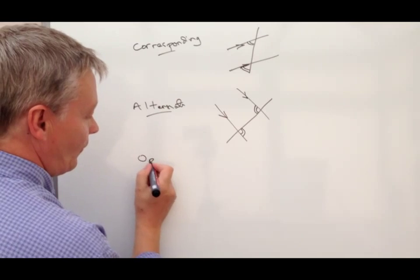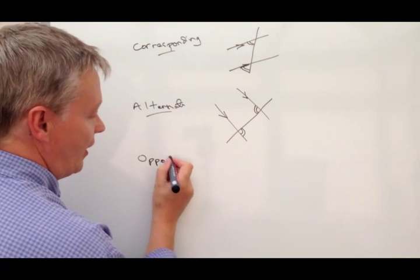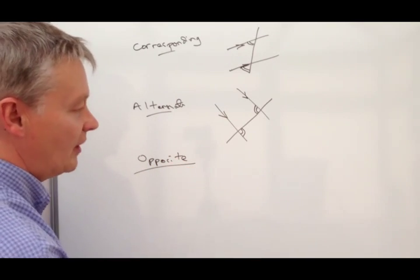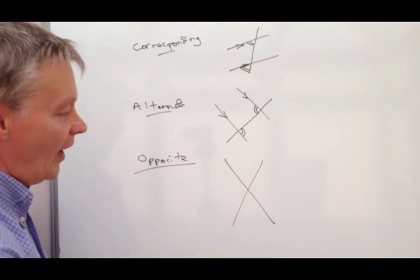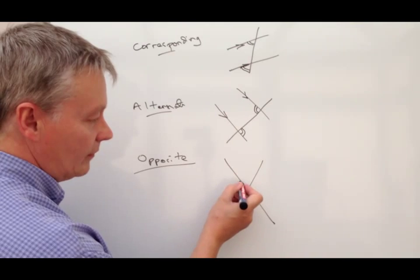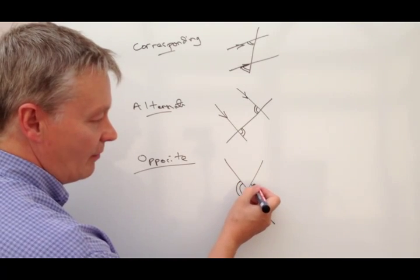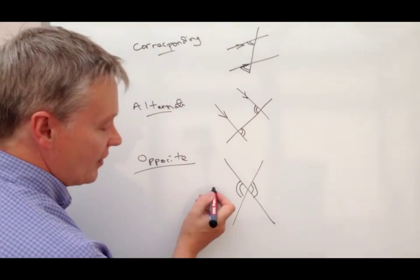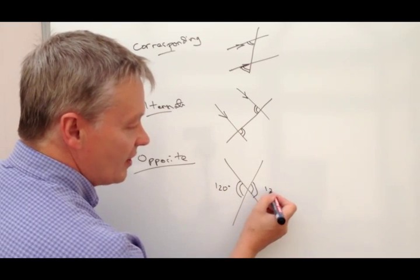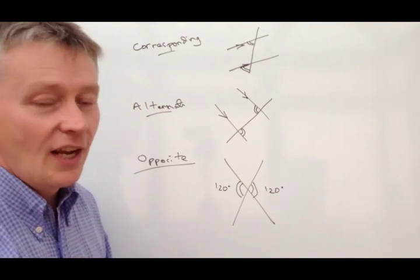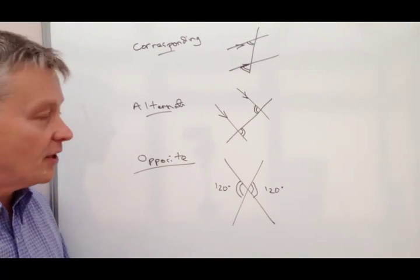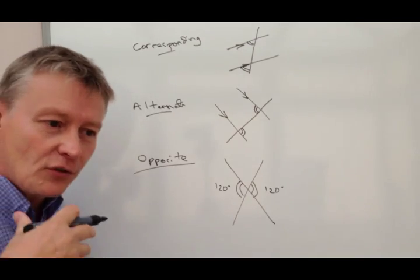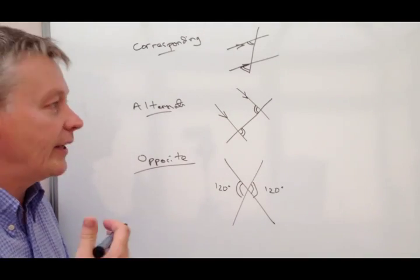The next one is opposite. And that's where if you've got two straight lines together. Then this angle is exactly the same as this angle. So if this angle is say 120 degrees, then this angle will be 120 degrees. And you will come across that quite a lot on some of the GCSE questions. So I'd say all of those three really are quite common.